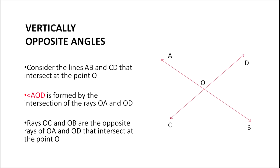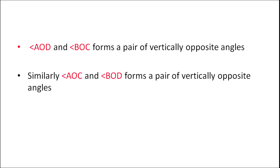Now let me deal with the concept of vertically opposite angles. Consider lines AB and CD that intersect at the point O. Because the lines intersect, angles are formed. The first angle, angle AOD, is formed because the rays OA and OD intersect. Also note rays OC and OB — the opposite rays of OA and OD — which also intersect at point O. Thus we have a pair of vertically opposite angles: angle AOD and angle BOC, and similarly angle AOC and angle BOD form another pair of vertically opposite angles.